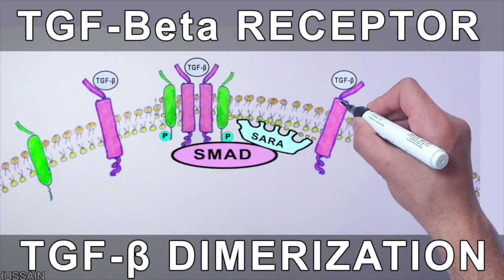In the previous video of cell signaling, we discussed the TGF-beta structure and its dimerization process. If you want to watch that video first, the link is in the description.